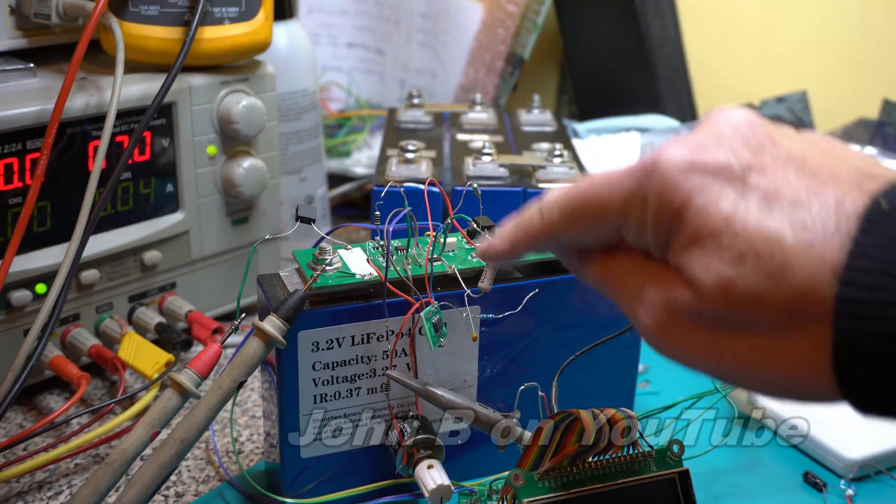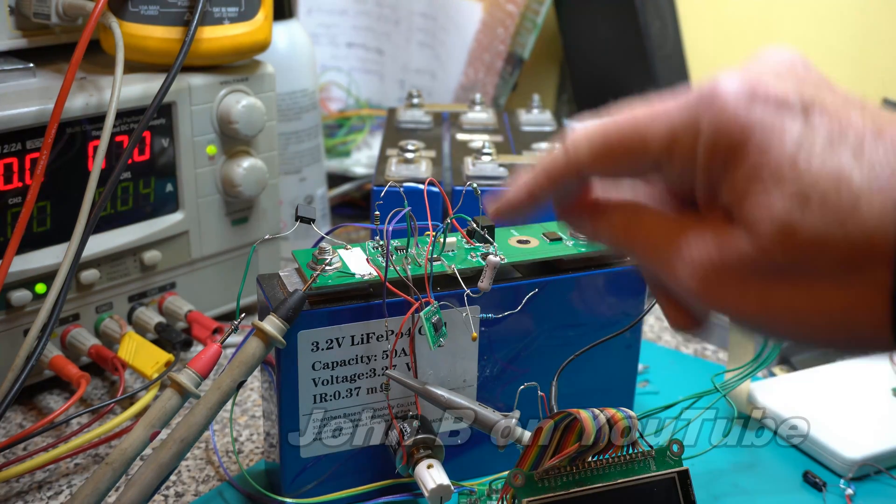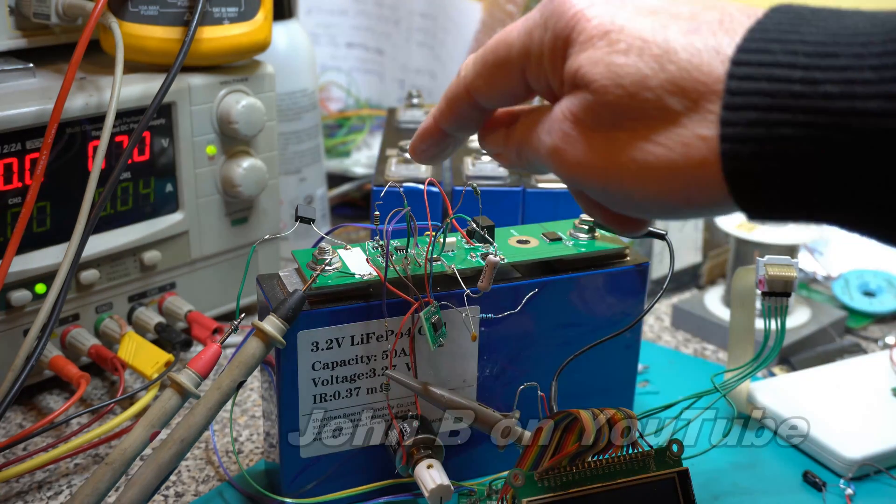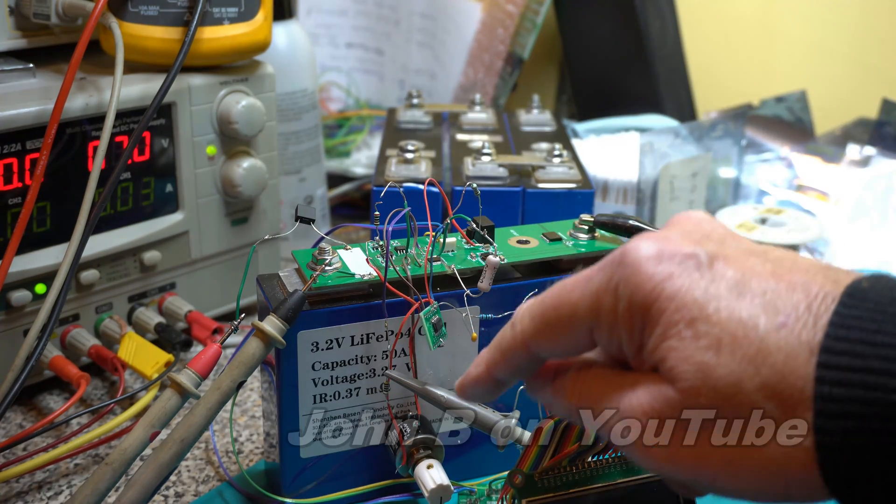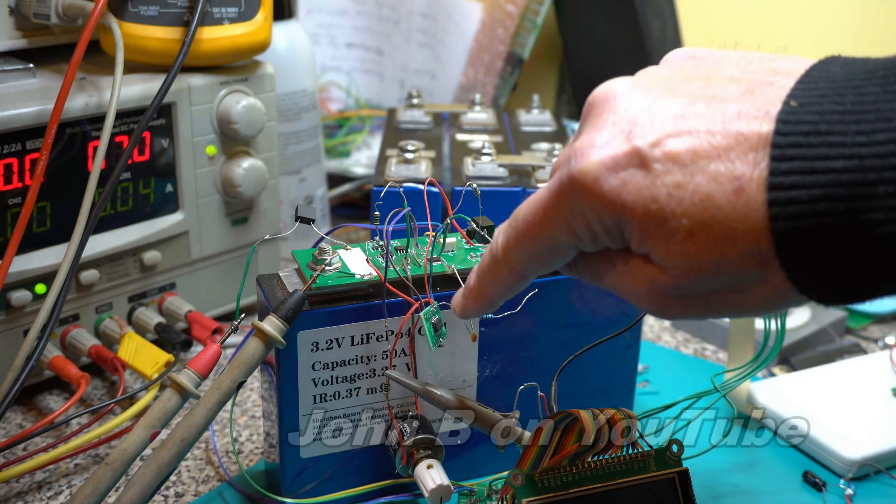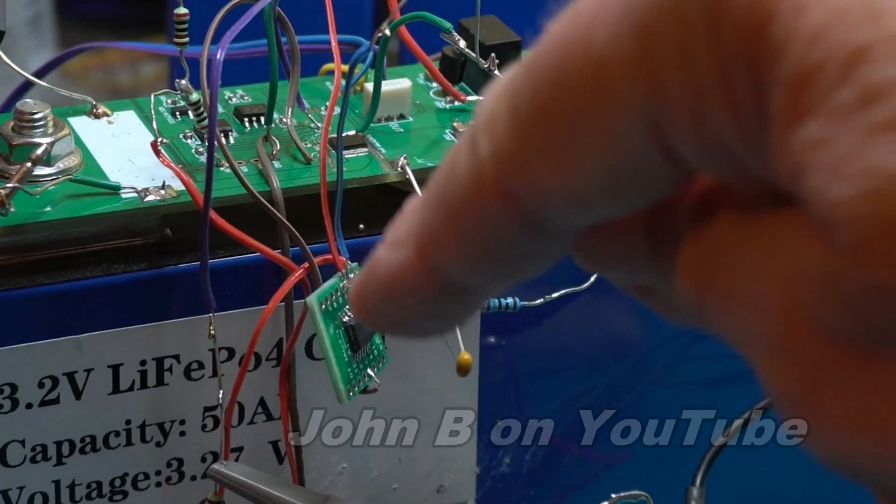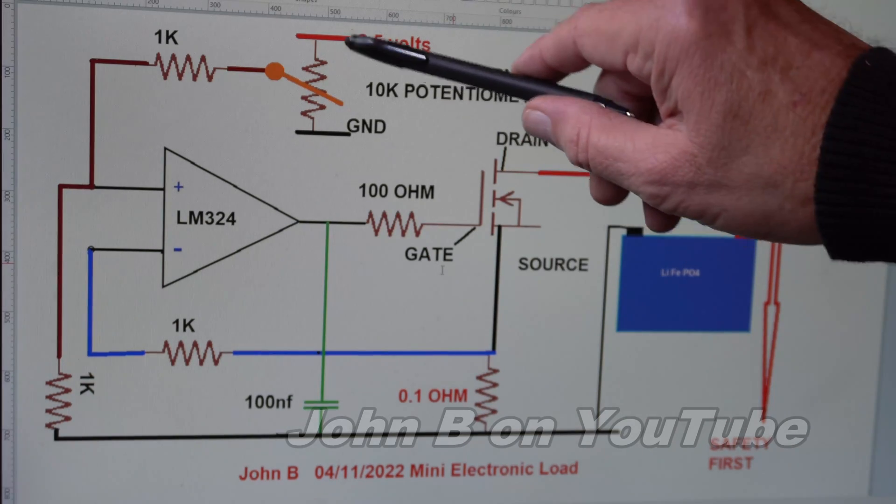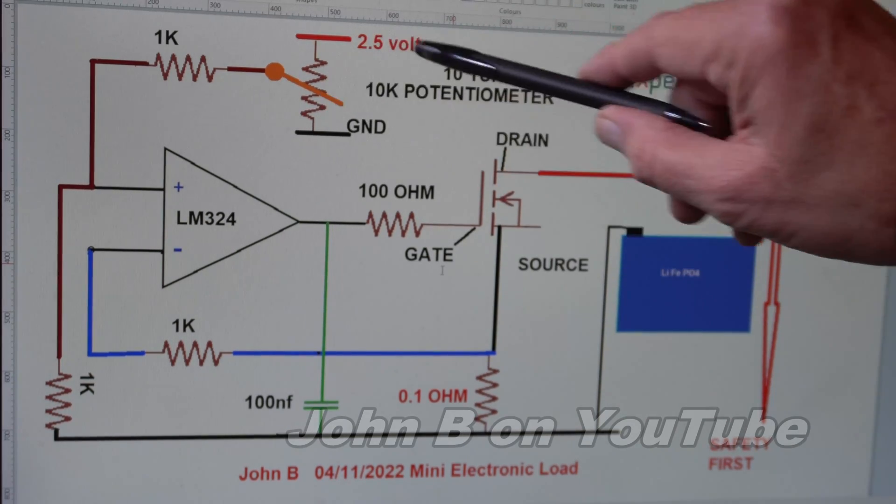But it still took me hours rigging up this and having it in such a way I can disconnect it, put the pot straight to the FET, disconnect a couple of leads and add this little operational amplifier. So what will that do?